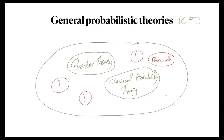So in this picture, there's quantum theory, classical probability theory, and for instance box world, which is a theory allowing for maximally non-local correlations in Bell-type scenarios. I've also put a number of question marks for other theories which we do not yet know.